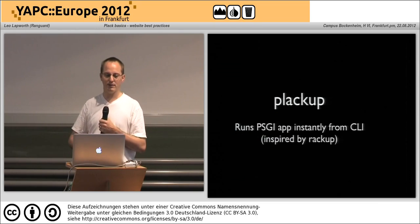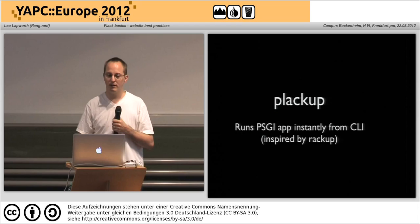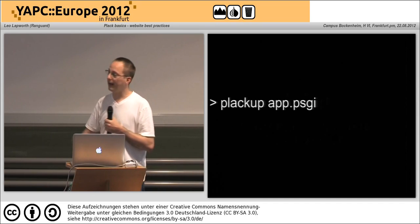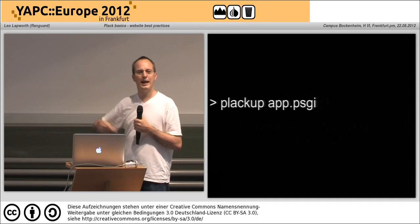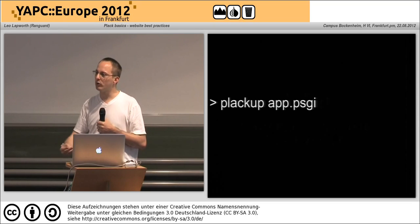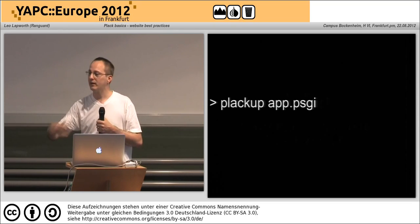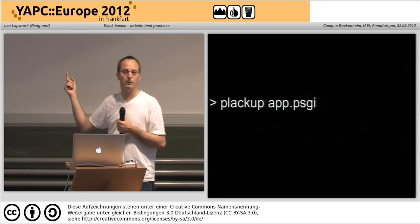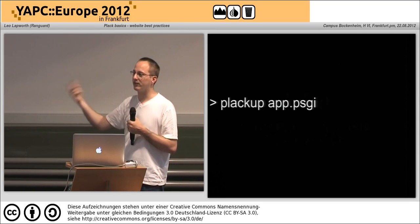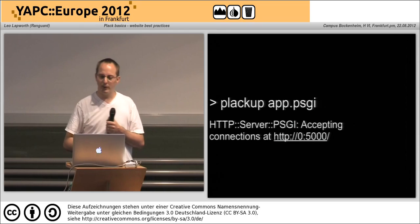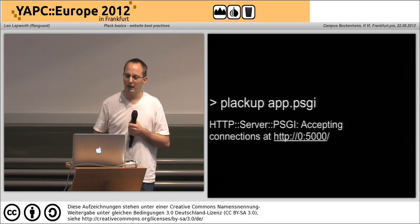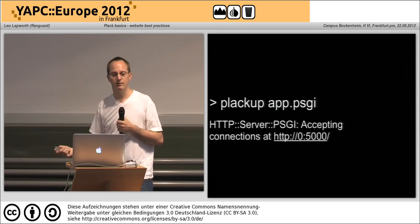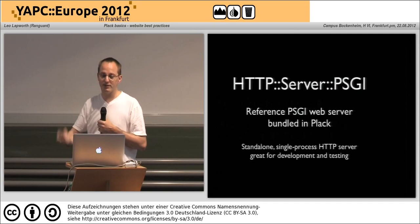plackup allows you from the command line to launch your Plack app. All you have to do is type 'plackup app.psgi' — app.psgi is your configuration where you join all your middleware together and put in your application. In fact, if you've actually called the file app.psgi you don't even need to specify it because that's the file it will look for by default.